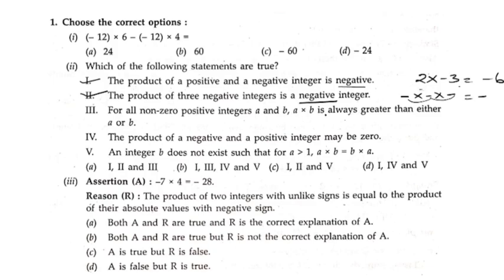For all non-zero positive integers a and b, a into b is always greater than either a or b. Suppose if I take 2 and 3 — 2 threes are 6. This 6 is greater than 2 as well as greater than 3, so the third statement is also true.